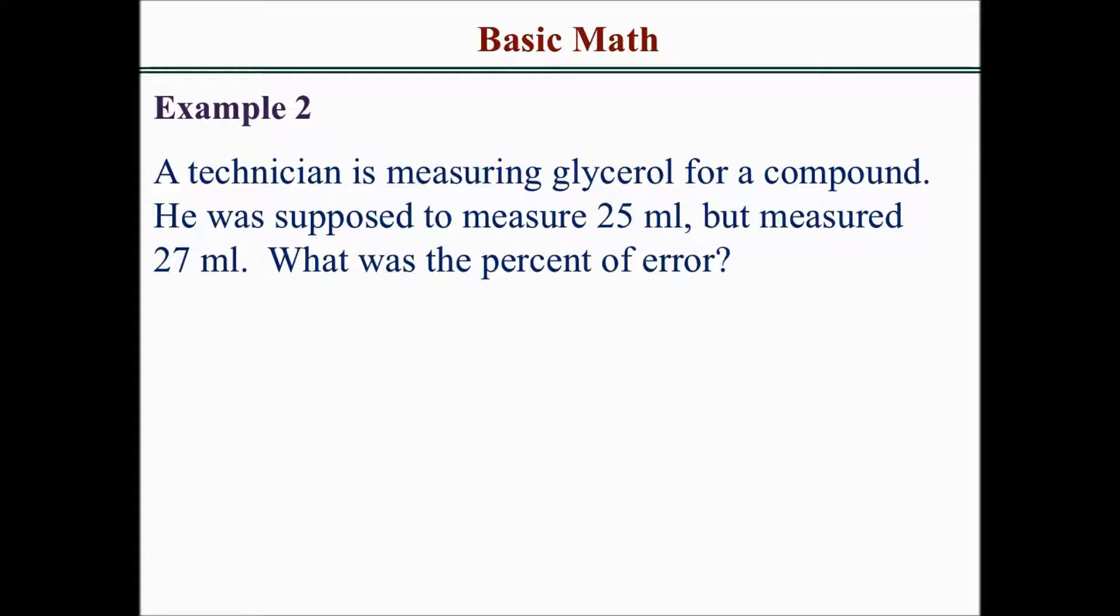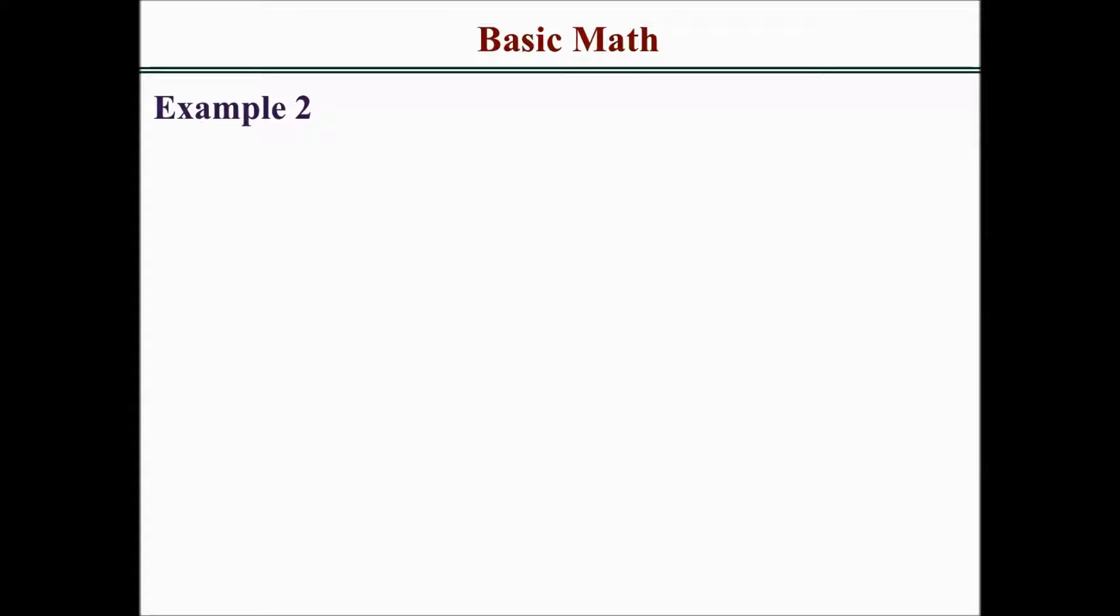Use the percent of error equation: the difference in volume divided by the correct volume, times 100%. Since he measured 27 mls instead of 25, the difference is 2.